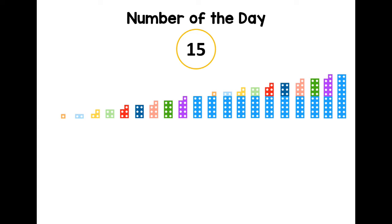Can we find it on the number shapes? Remember that the number one in 15 means we need one ten, and then the five means we need five ones. So we need a ten and a five. Can you see it on the number track? I think you found it here — well done.